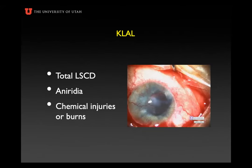Keratolimbal allograft is performed for complete limbal stem cell deficiency. The most common use for this is aniridia — it actually has the best prognosis. I learned about this from Ed Holland and others, and there are really large populations of aniridia patients, including many that I've treated here in Utah, who've done pretty well with this surgery over a long term. We also use it quite a bit for chemical injuries or burns, many times bilateral injuries. It's not used as much for unilateral conditions because some of the other techniques can be better.